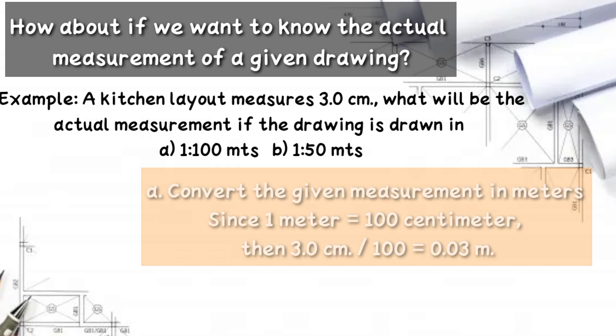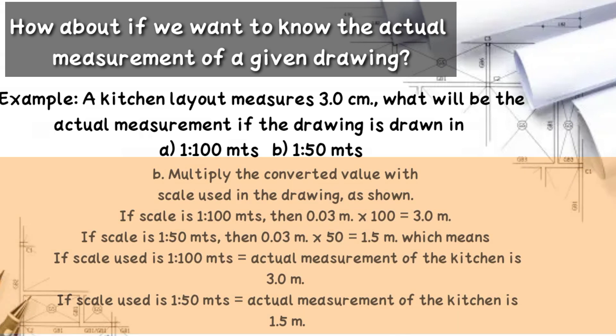Convert the given measurement to meters. Since 1 meter is equivalent to 100 cm, then 3 cm divided by 100 equals 0.03 m. Letter B: multiply the converted value by the scale as shown. If the scale is 1 to 100, then 0.03 m times 100 equals 3 m.